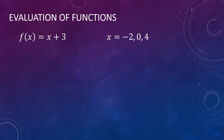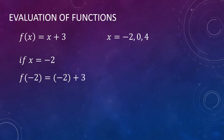We're going to determine the value of our function if our x is equal to negative 2, 0, or 4. So first, if our x is equal to negative 2, our function can be noted as f of negative 2 equals. All you have to do is to simply substitute the value of x into our function, so it becomes negative 2 plus 3. So f of negative 2 is equal to 1.